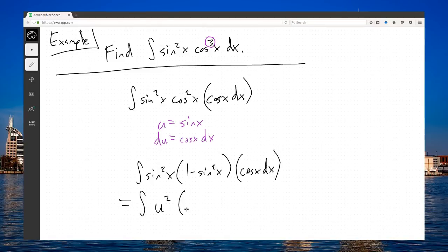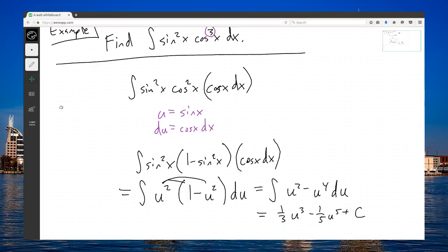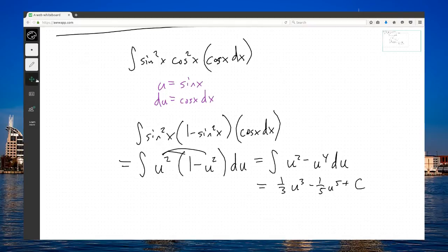So u squared minus u to the fourth, one-third u cubed, one-fifth u to the fifth plus c. And then finally, we get plugging in for u, one-third sine cubed of x minus one-fifth sine to the fifth x plus c.